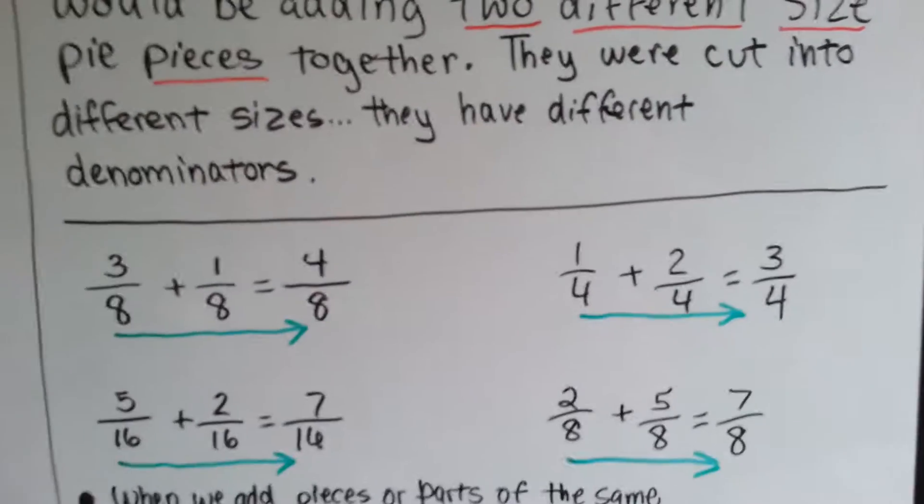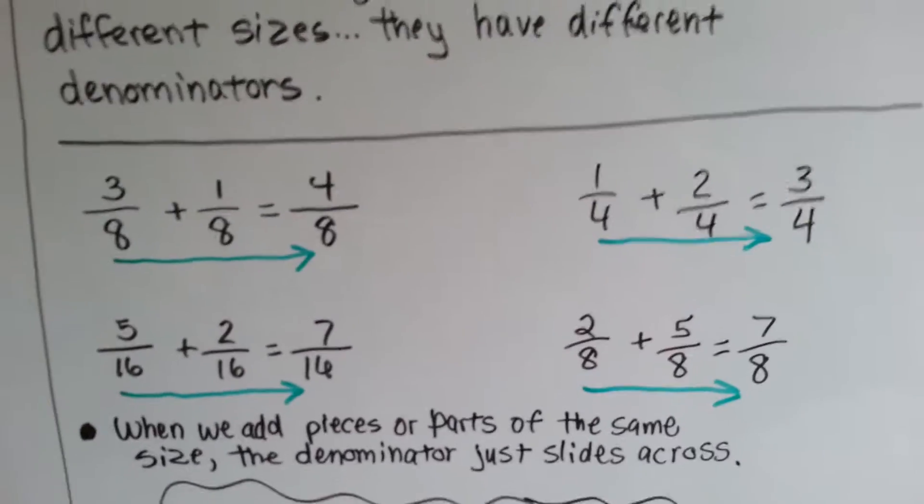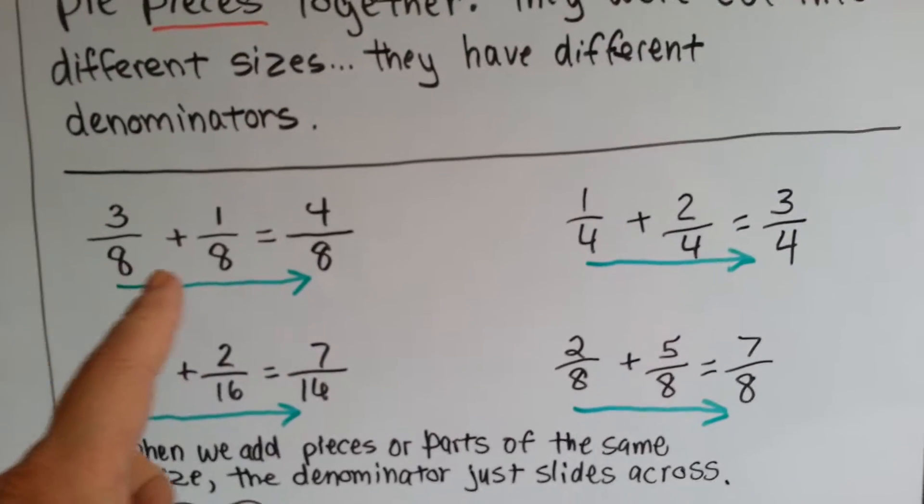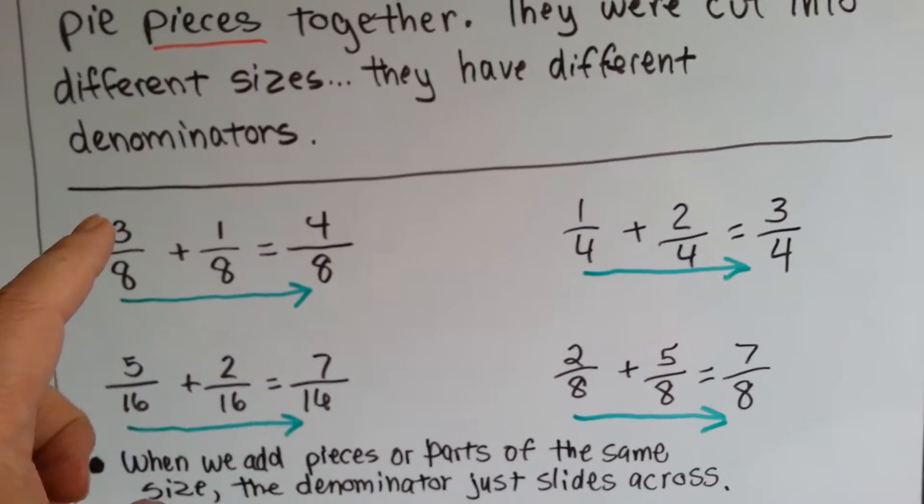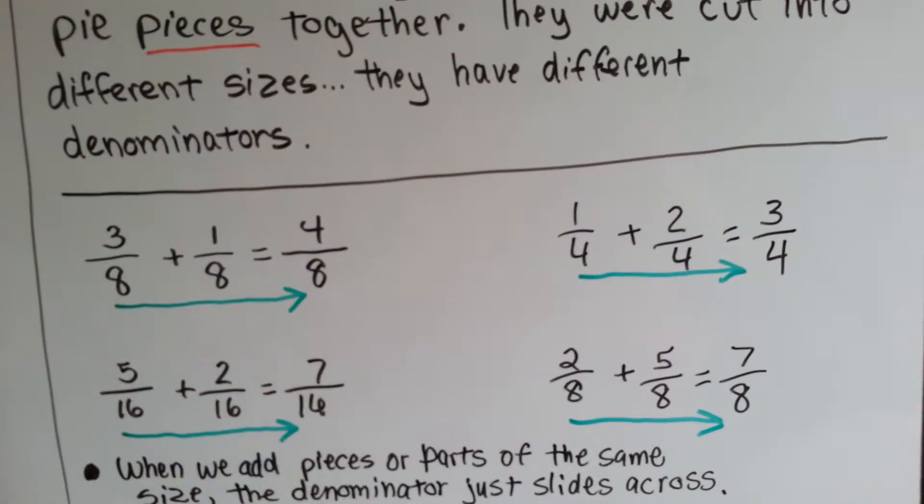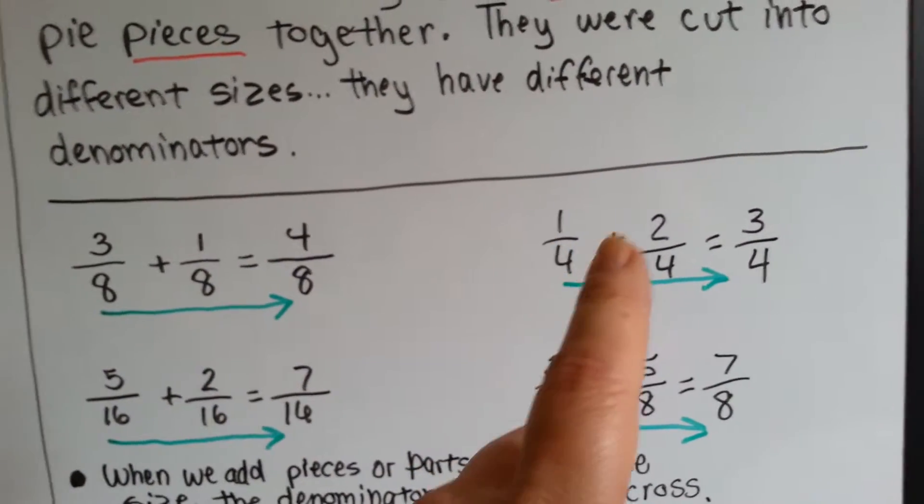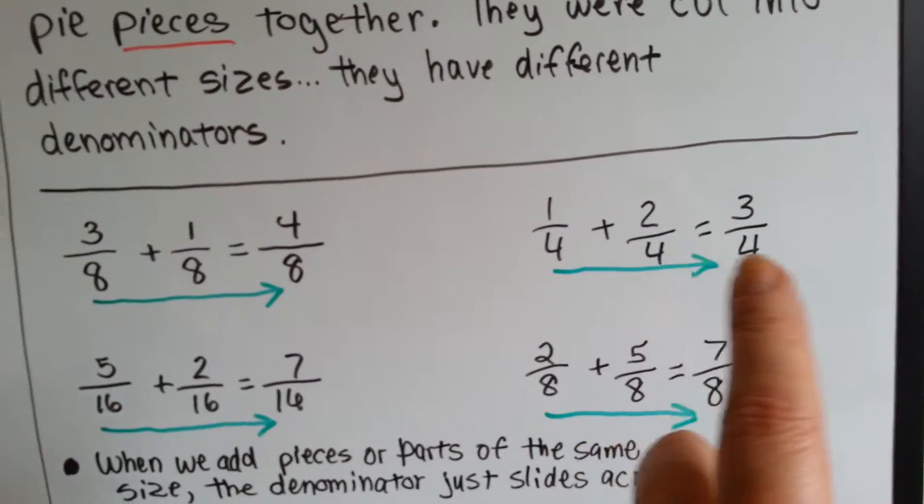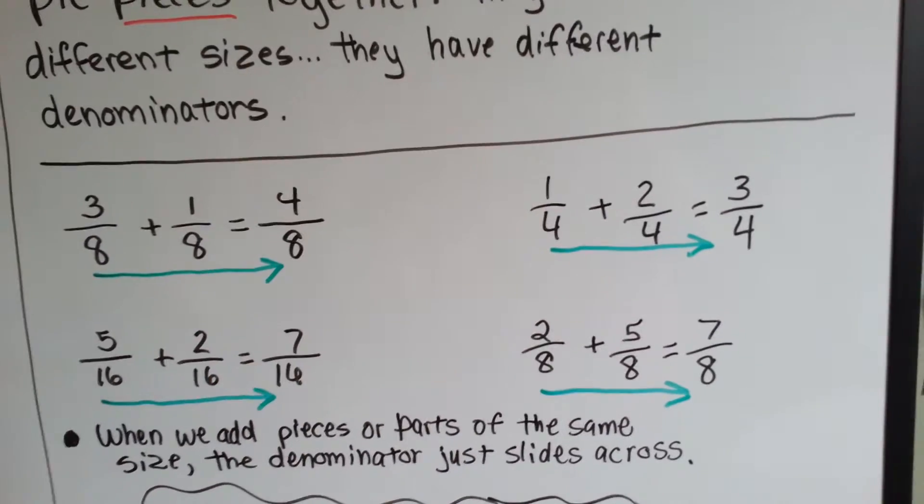When we add fractions that have the same denominator, the denominator just slides across. Three-eighths of a pie plus one-eighth of a pie would be four-eighths of a pie. One-fourth plus two-fourths is three-fourths. We add the numerator and slide the denominator across because they're all the same size cuts.